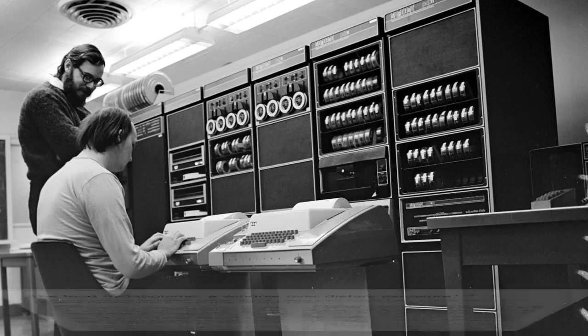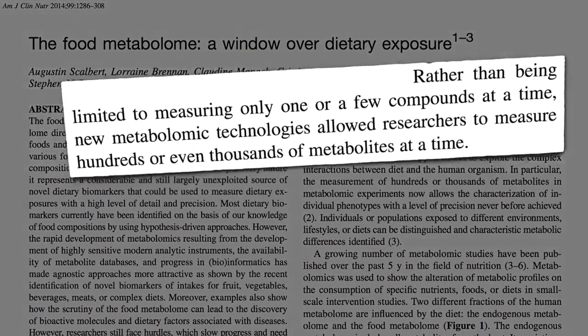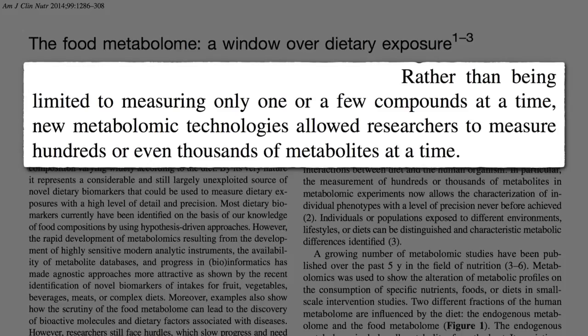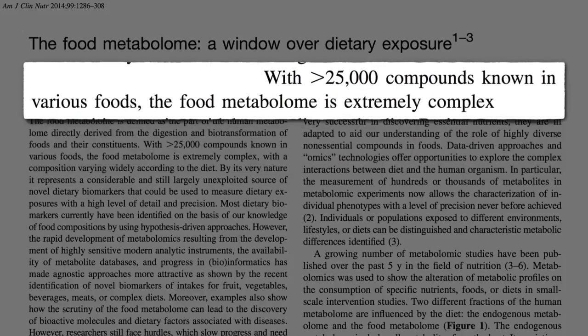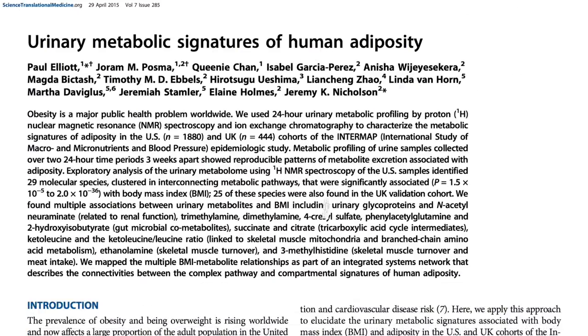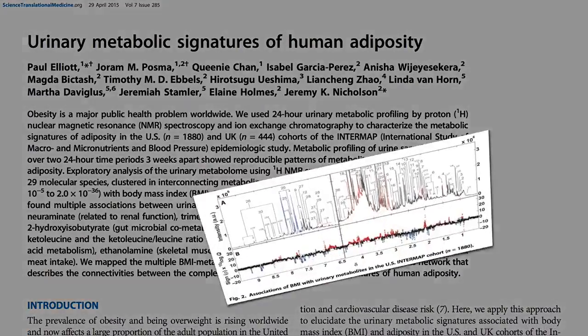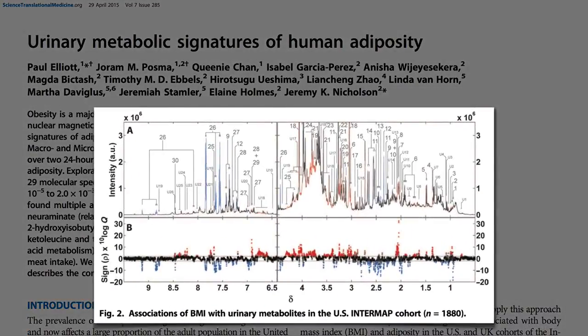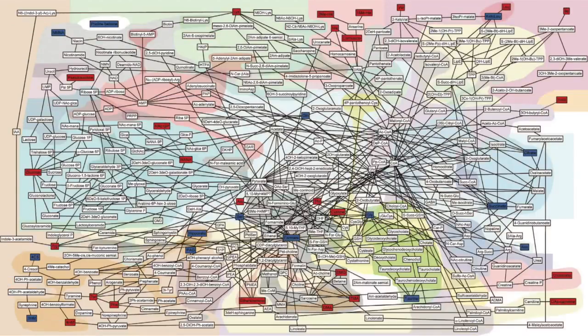New technologies have allowed researchers to measure hundreds, or even thousands, of metabolites at a time, which is good, since more than 25,000 compounds may be entering our body through our diet alone. The data comes out looking like this, which computers can turn into maps that allow researchers to try to piece together connections.